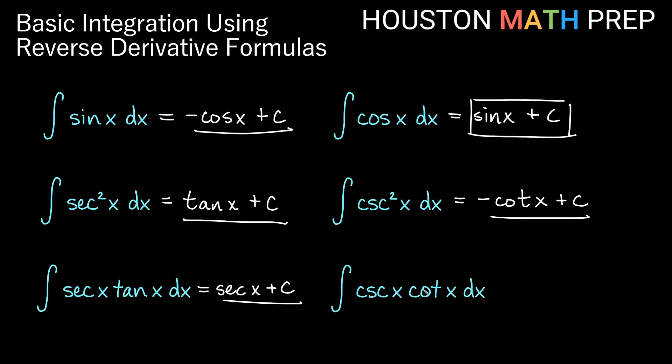And when we complete a derivative that gives us something like cosecant x cotangent x, think about the derivative of cosecant x is actually negative cosecant x cotangent x, the opposite sign of what we get here. So the antiderivative of this is actually negative cosecant x plus c.